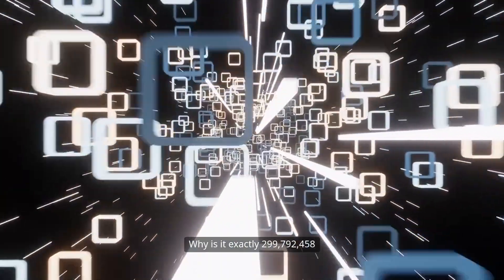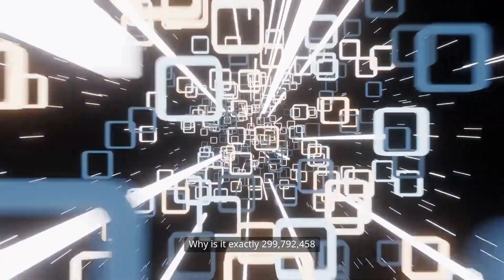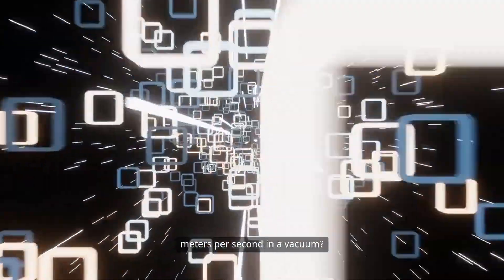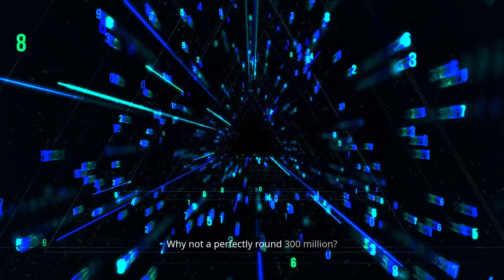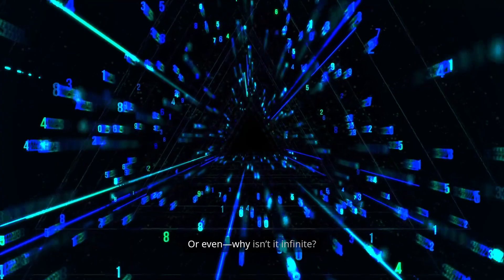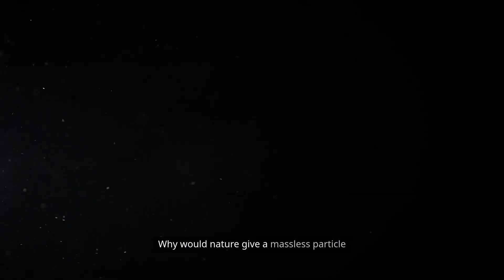Why does light travel at this speed and no faster? Why is it exactly 299,792,558 meters per second in a vacuum? Why not a perfectly round 300 million? Or a billion? Or even, why isn't it infinite? Why would nature give a massless particle like the photon such an oddly specific cap?